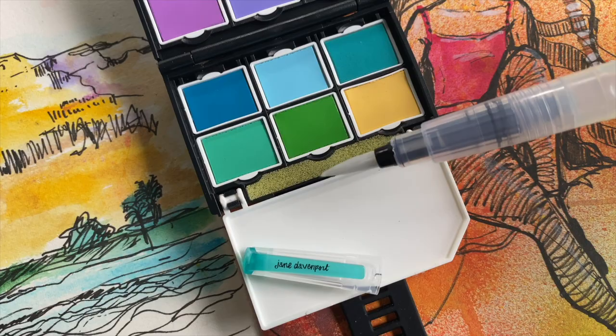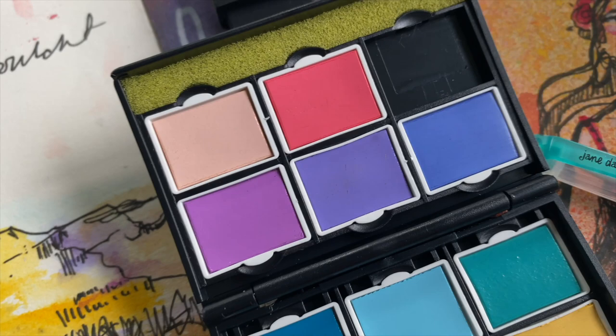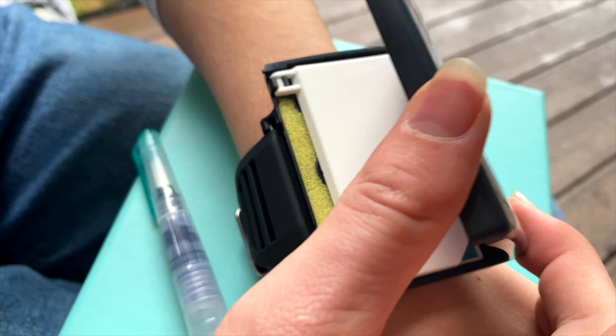You fill the handle of the brush with water. You don't even need to carry another water source with you. And you can use the foam that is inside the palette to help you control the flow of water. The pans just lift out and you can refill them with tube watercolor.